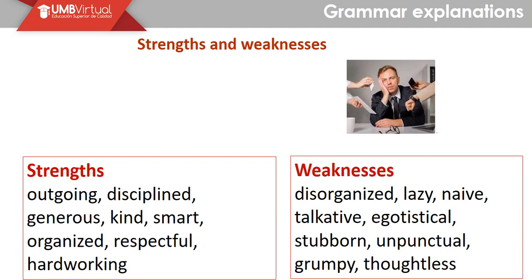Weaknesses: disorganized, lazy, naive, talkative, egotistical, stubborn, unpunctual, grumpy, and thoughtless. You know that each of those words are important at the moment that we are describing ourselves. But it is not only about mentioning those words — the most important thing is to explain in what context we can relate and talk about those words in order to support our ideas.